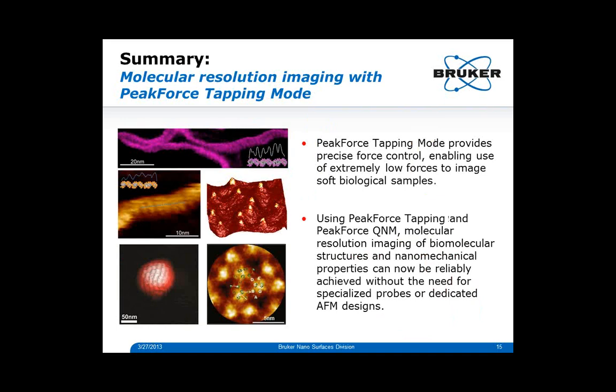In summary, Peak Force Tapping mode provides precise force control, enabling the use of extremely low forces to image soft biological samples. Using Peak Force Tapping and Peak Force QNM, molecular resolution imaging of biomolecular structures and their nanomechanical properties can now be reliably achieved without the need for specialized probes or dedicated AFM designs. Ultimately, Bruker's Peak Force Tapping mode is now really redefining the capabilities and ease of use of AFM for high-resolution imaging of biological samples. Thank you.